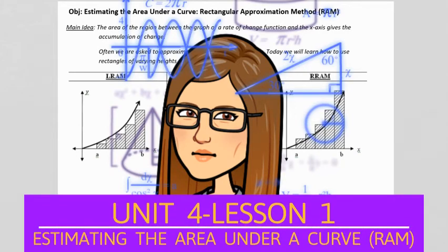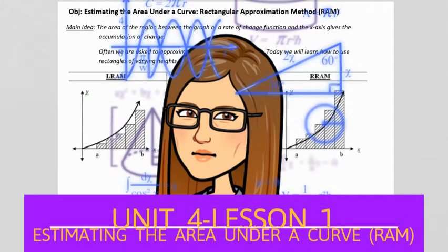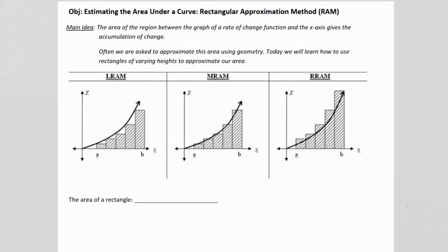Unit 4, Lesson 1: Estimating the Area Under a Curve — Rectangular Approximation Method, or RAM. The main idea is that the area of the region between the graph of a rate of change function and the x-axis gives the accumulation of change.